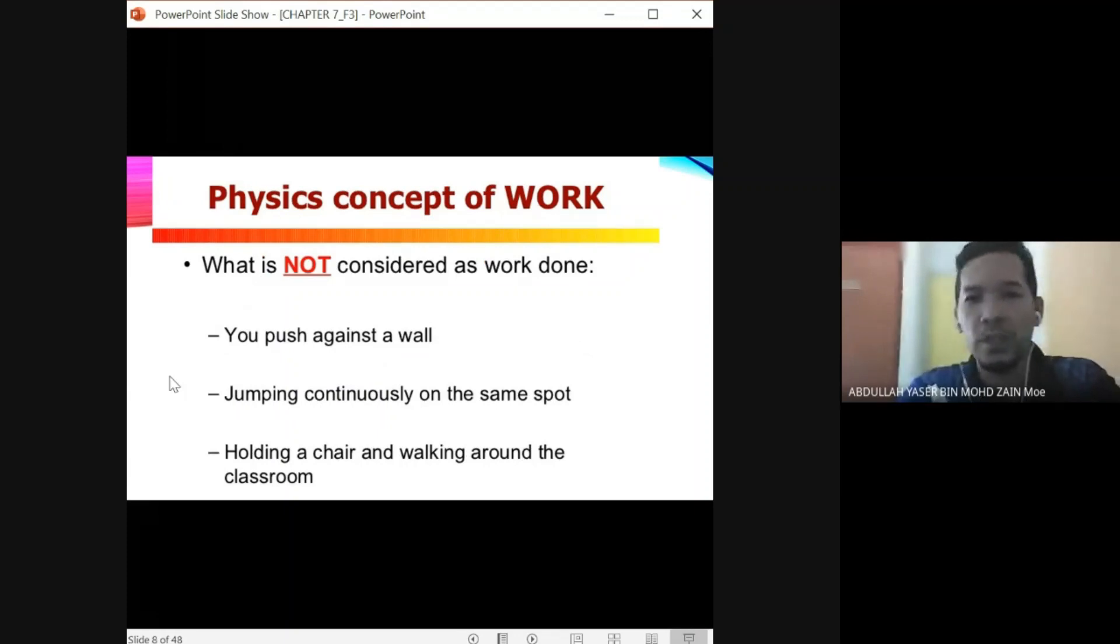What is not considered as work done? When you push against a wall, you are trying to push the wall, but there is no distance there. The second one is jumping continuously on the same spot - that is also not considered as work done. The third one is holding a chair and walking around the classroom - that is also not considered as work done.